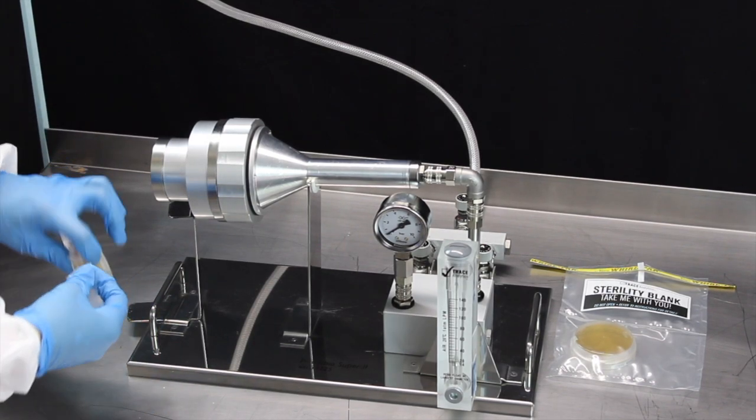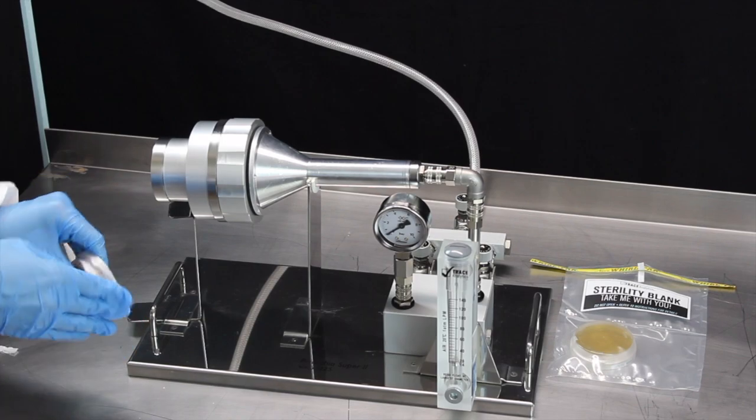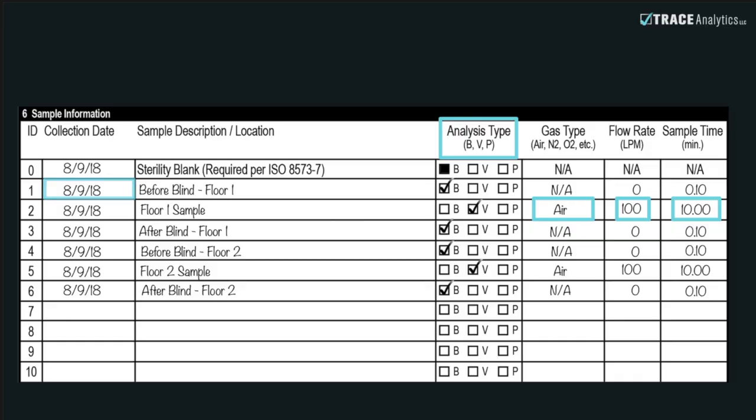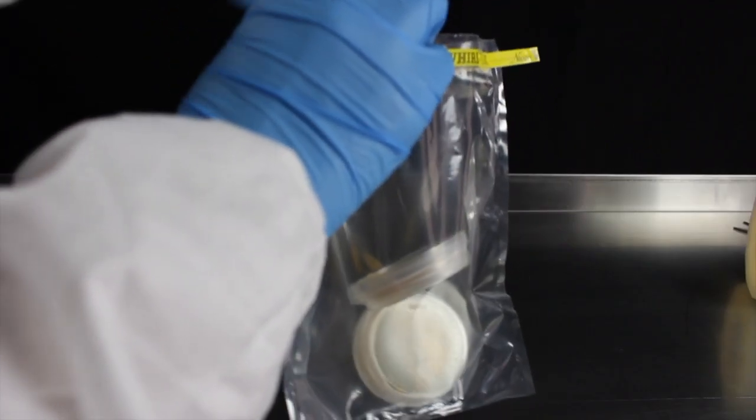Parafilm your contact plate. Label the base of your plate with a permanent marker using the appropriate number from your chain of custody. Fill out your chain of custody, making sure you write down the flow rate and sample time since this is an air sample, not a blind. Place the sealed and labeled plate in the provided sterile bag.